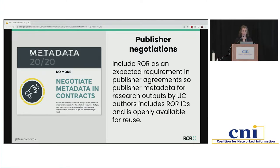A second way we are building open identifiers into our open access strategy is through our publisher negotiations. One of the strategies we've taken more recently is to make sure we're including ROR and other identifiers in our publisher agreements — emphasizing to the publishers we're signing transformative agreements with that it's extremely important they are collecting ROR IDs in their systems, specifically for researchers at UC, and making sure that metadata is getting deposited in Crossref or other places where it can be made openly available to UC and anyone else.